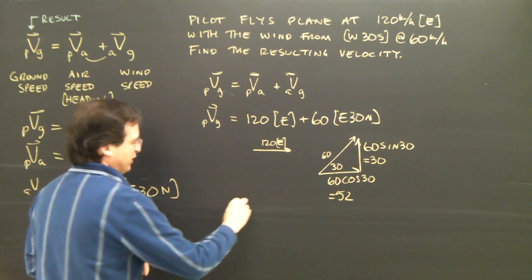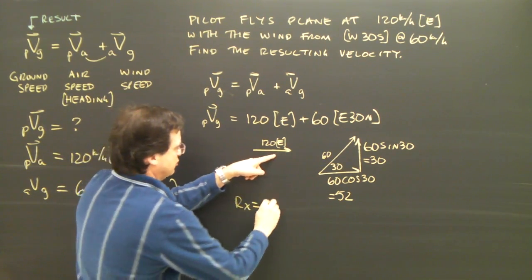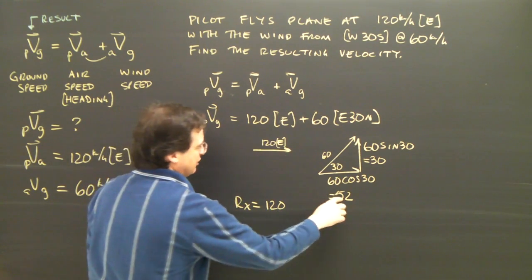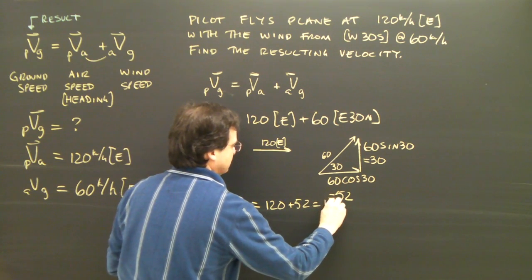So let's add up all the x's. Resultant in the x, we've got 120 to the right, which is positive, and 52. So my x is 172.